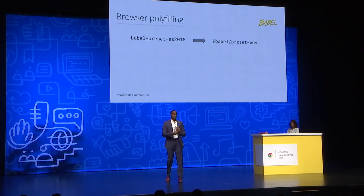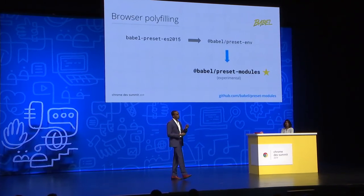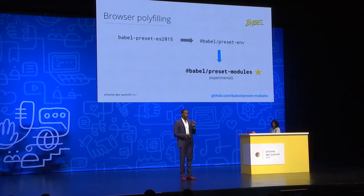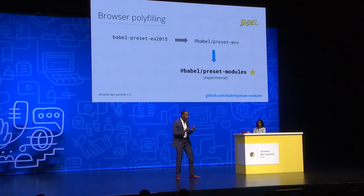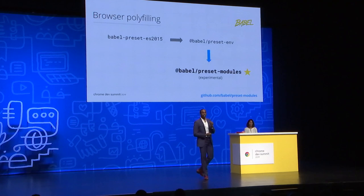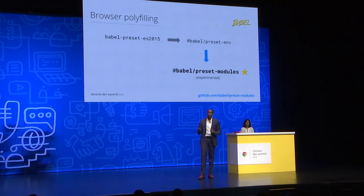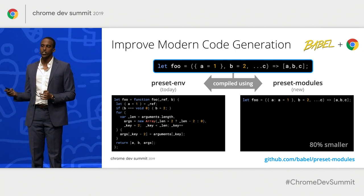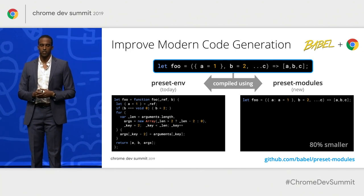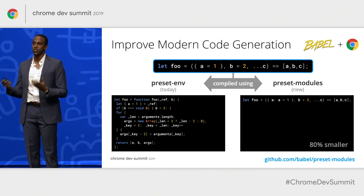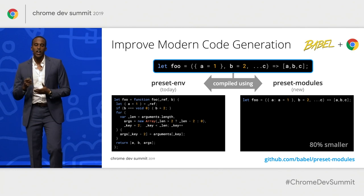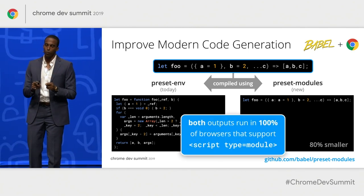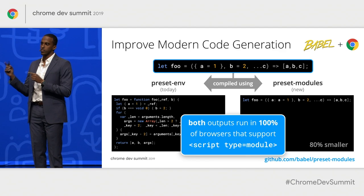Today we're excited to introduce a new Babel preset that optimizes specifically for this case. It's called Babel Preset Modules, and it's available on NPM right now. Running the same code through preset modules produces a lot smaller output. Both outputs run in all browsers that support script type modules.